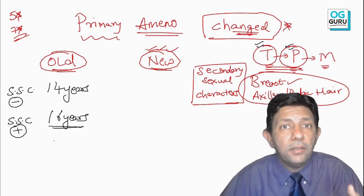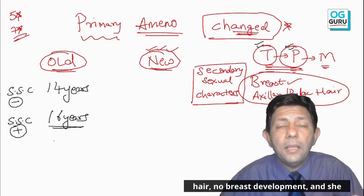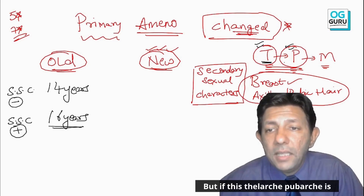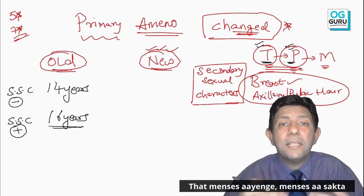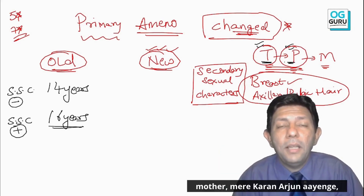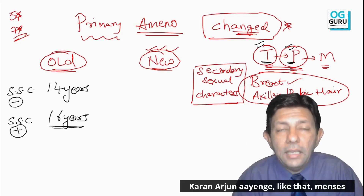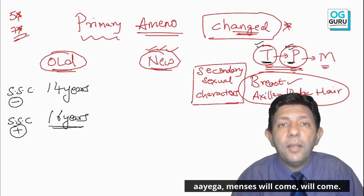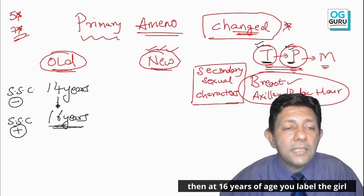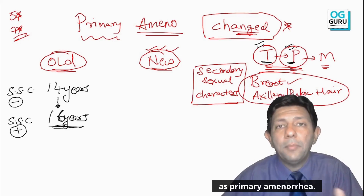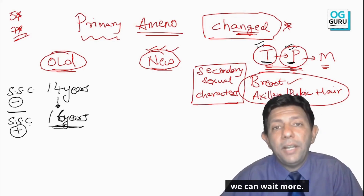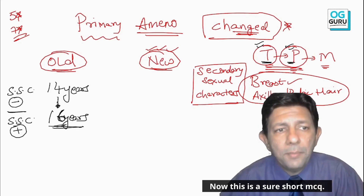Under the old definition: a 14-year-old girl with no axillary hair, no pubic hair, no breast development, and no periods is labeled primary amenorrhea. But if thelarche and pubarche are present, you can wait — menses will come — and if still no menses by 16 years of age, you then label the girl as primary amenorrhea.